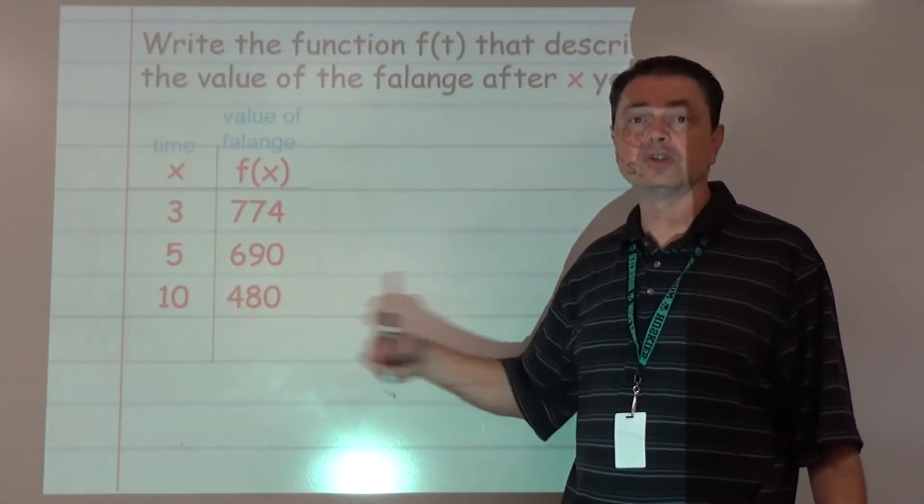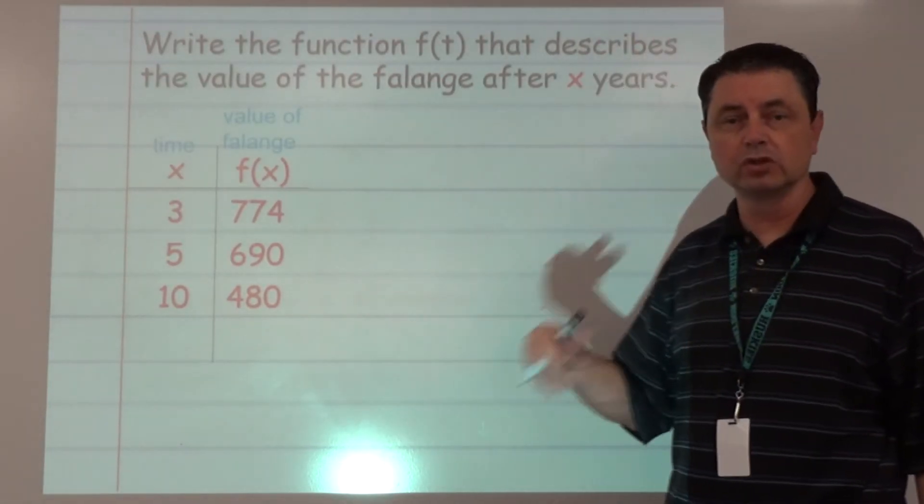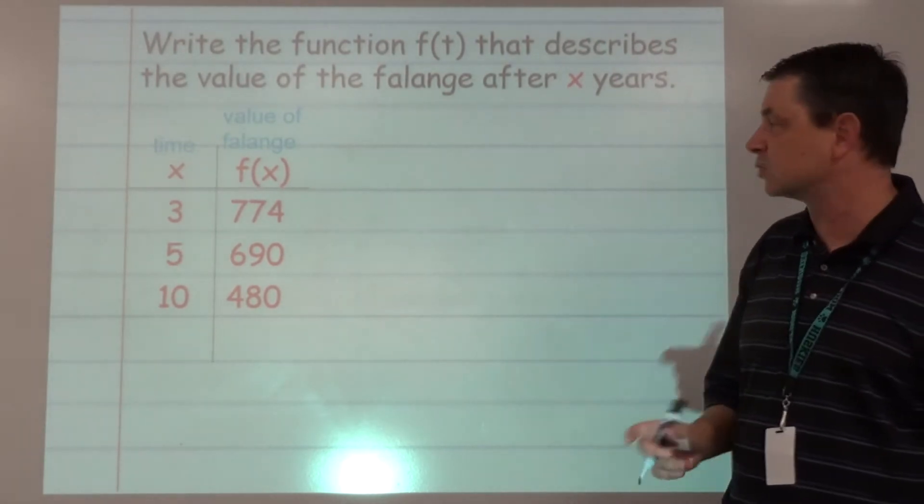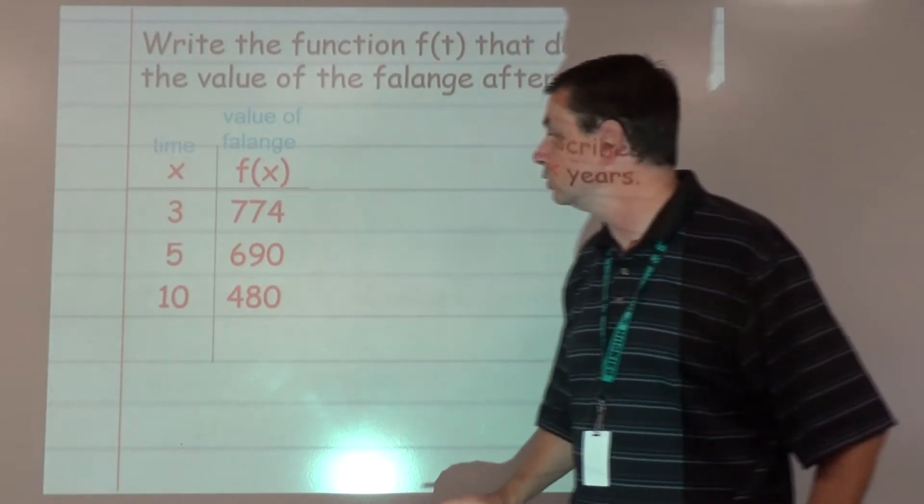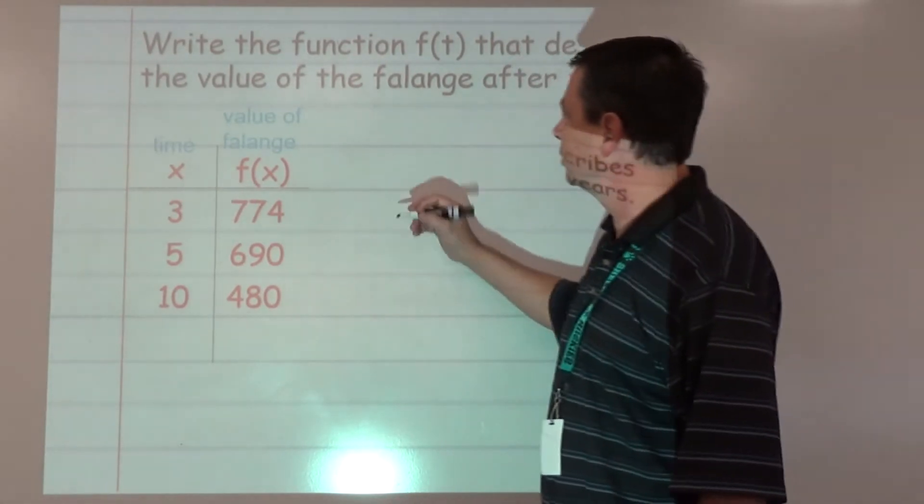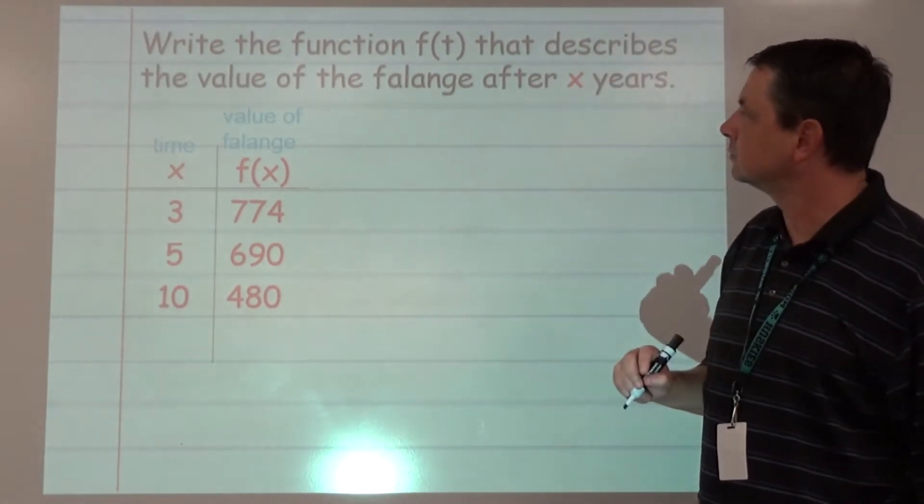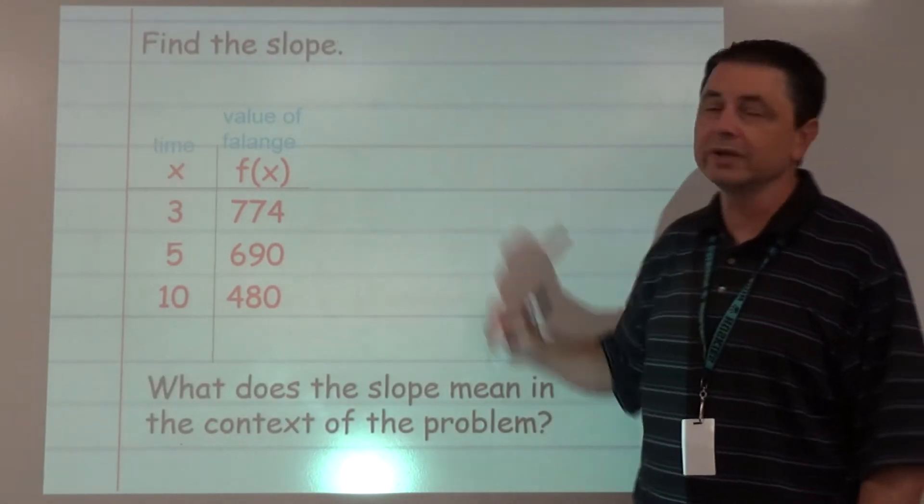You could go through and use the slope formula: m equals y2 minus y1 over x2 minus x1. Like I said, we already found the slope. Rate of change was negative 42. That's our slope.